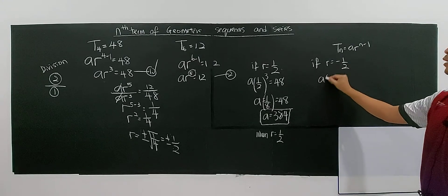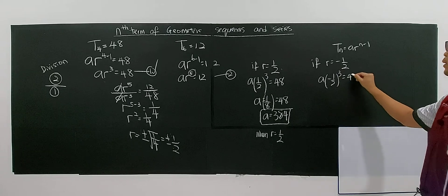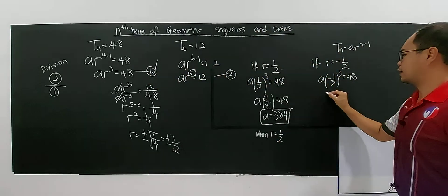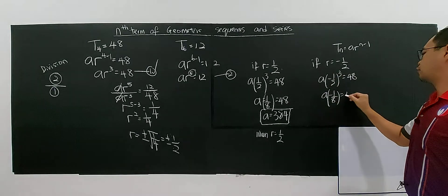How about the other case? For r = -1/2, you have a·(-1/2)³ = 48. Put this back into equation 1. You'll get a·(-1/8) = 48.